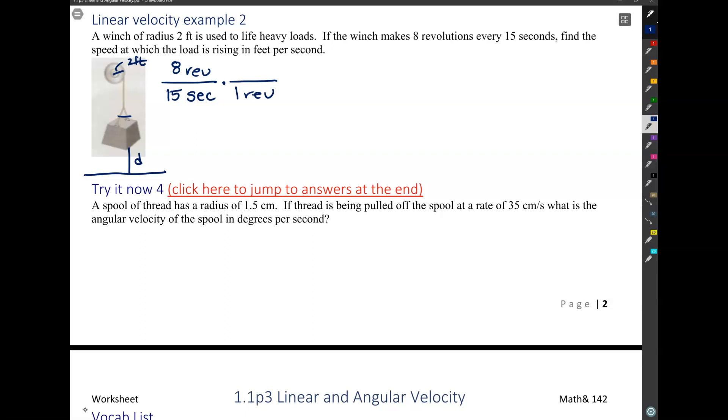any given point on the rope will have traveled all the way around the circumference of the circle. And the circumference of the circle is 2π times the radius.